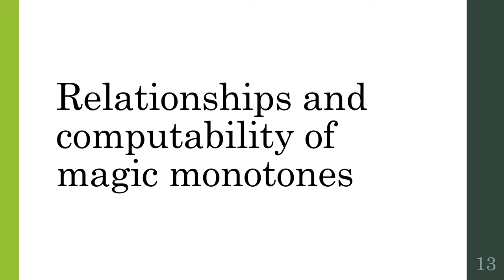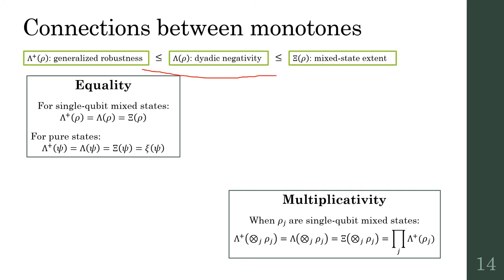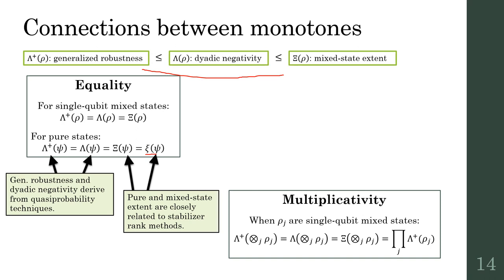Finally, I want to tie these methods together by means of our resource theory results. In general, the three monotones we defined satisfy these inequalities, but we showed they are equal for important cases, namely single-qubit states and pure states, where they also equal the pure state extent. This provides the link between stabilizer rank and quasi-probability methods.